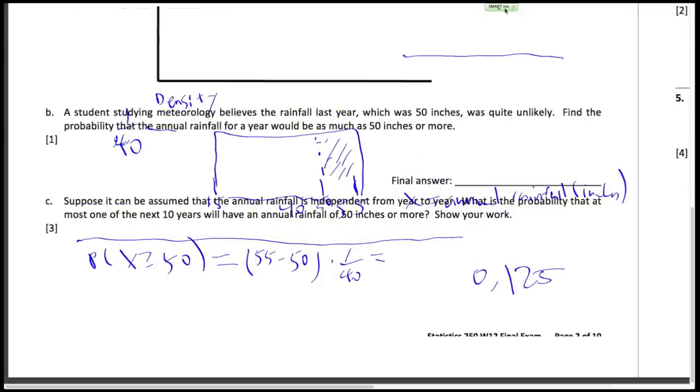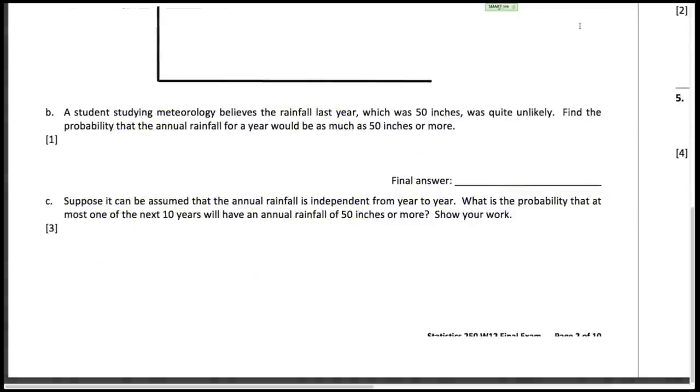Now we want to assume that the annual rainfall is independent from year to year. So we want the probability that at most one of the next 10 years will have an annual rainfall of 50 inches or more.